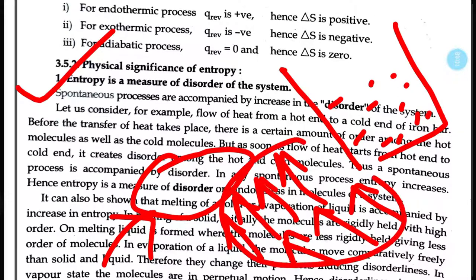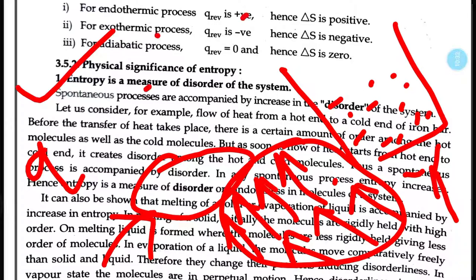When heat is supplied, the compact order of the molecules of ice is disturbed due to a decrease in the attractive forces. Ice gets converted into water. If we supply more heat to the water, the water gets converted into vapour, and the molecular order is further disrupted.